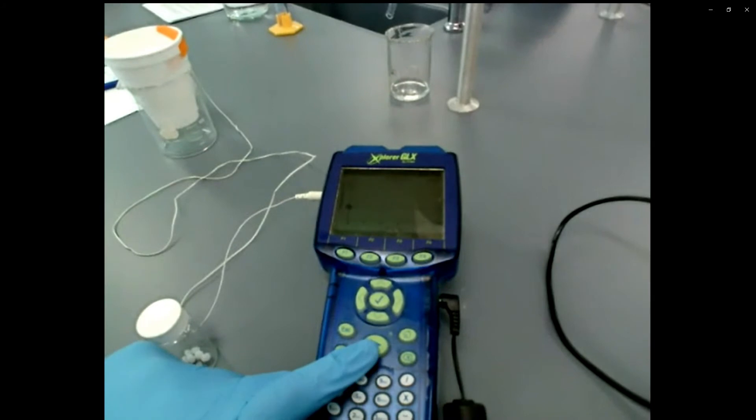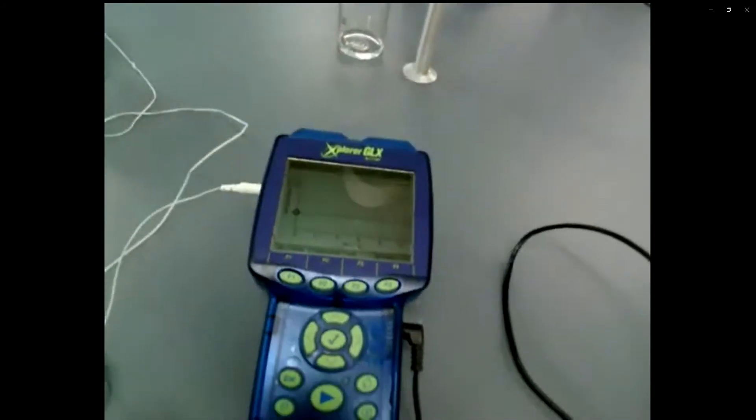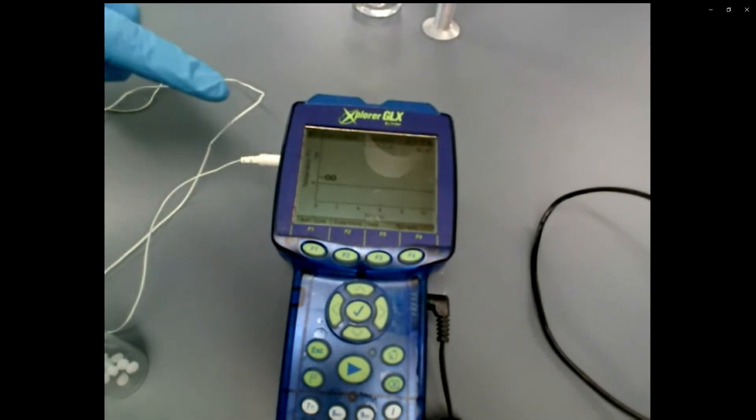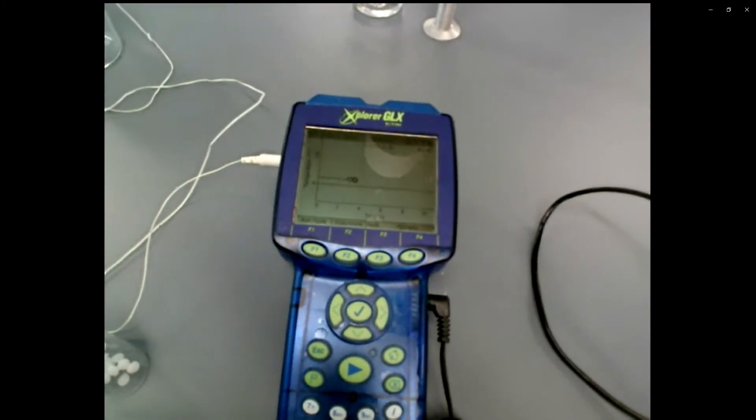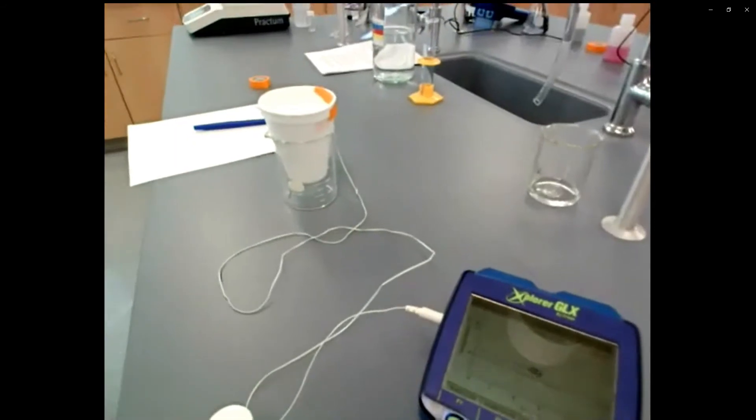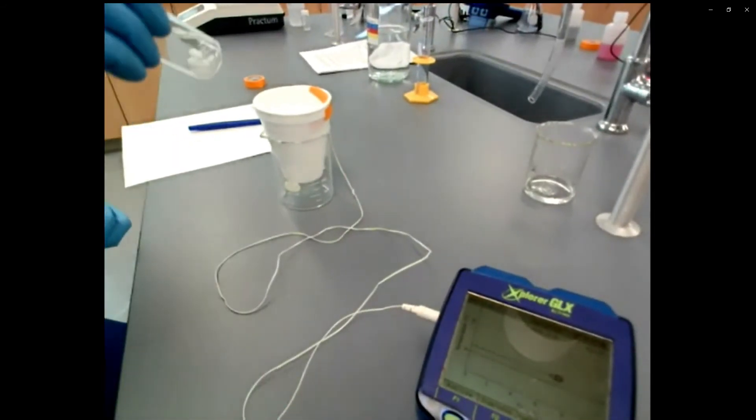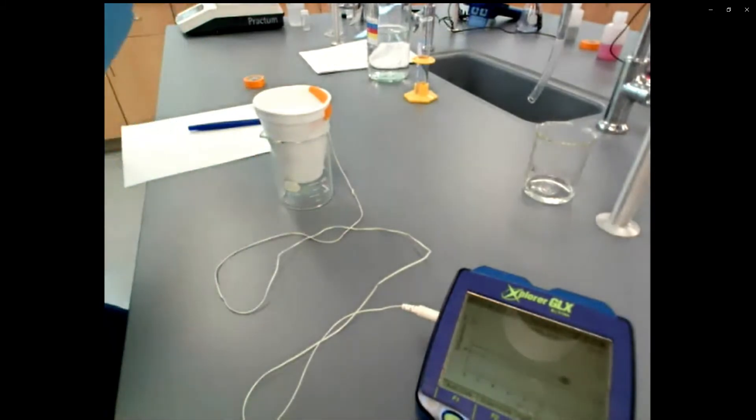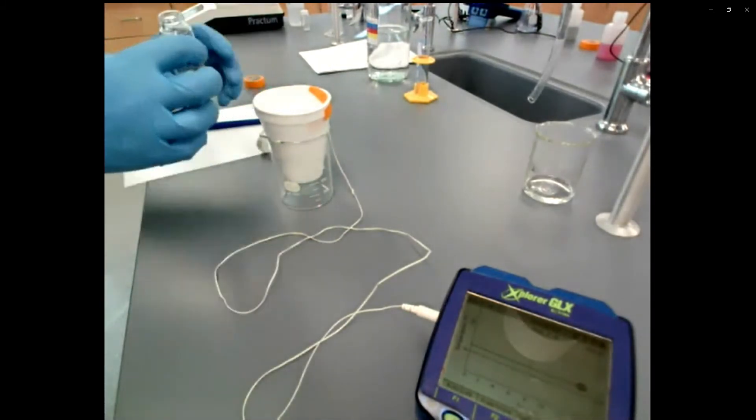So I'm going to push play. When I do that, you should see it start collecting a bunch of data points as the time goes, which it does. And this should be a flat line. The cup is at room temperature. Everything in the cups been sitting in this lab for a long time. It should just be a flat temperature of about 23 or so degrees Celsius.